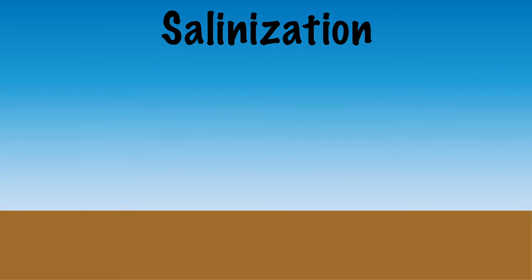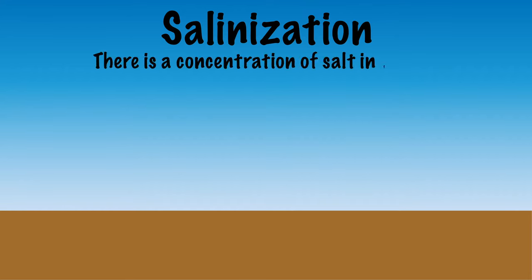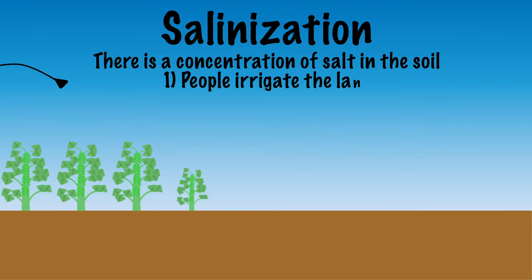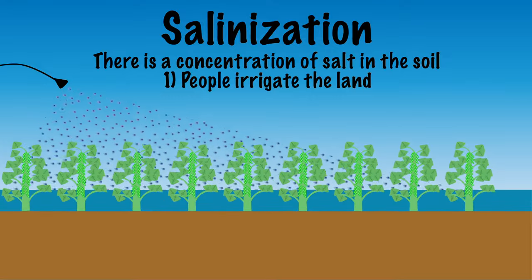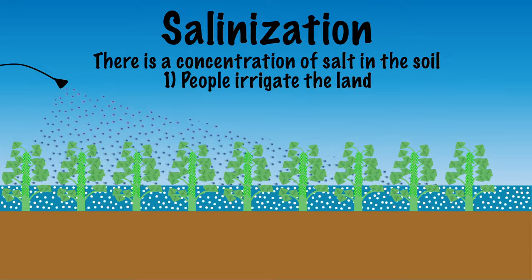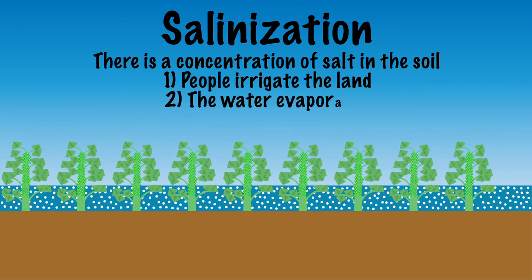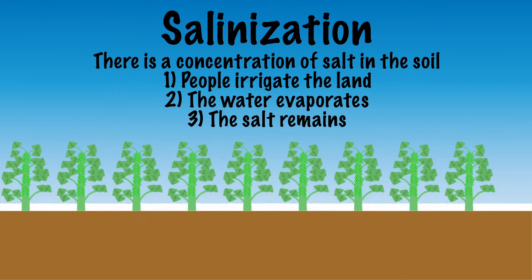Another form of soil degradation is salinization. This means that there is a concentration of salt in the soil. That's because people irrigate the land — they use a lot of water in warm and dry areas on agricultural lands. But even drinking water contains a little bit of salt. If the water evaporates on land due to the heat, the salt remains, because it does not evaporate. The cause of salinization isn't because the water washes away, but because it evaporates. In this way, salt accumulates, decreasing plant growth.